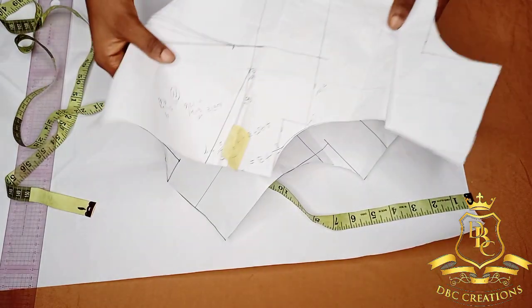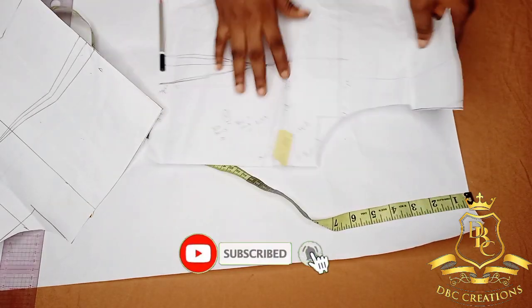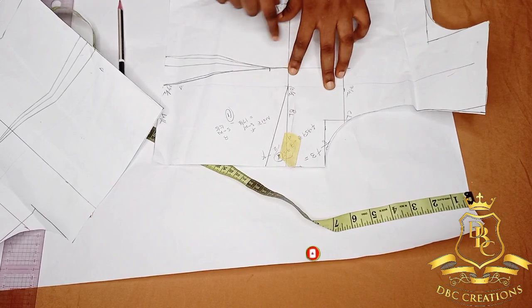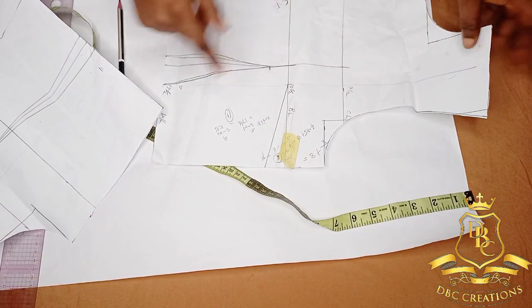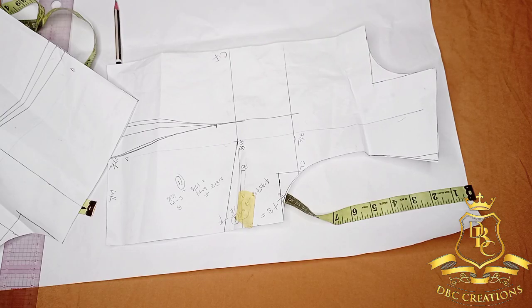So this is my basic body that I drafted out in the last video. I'm going to use it to construct this corset. All I have to do is to paint then trace out.